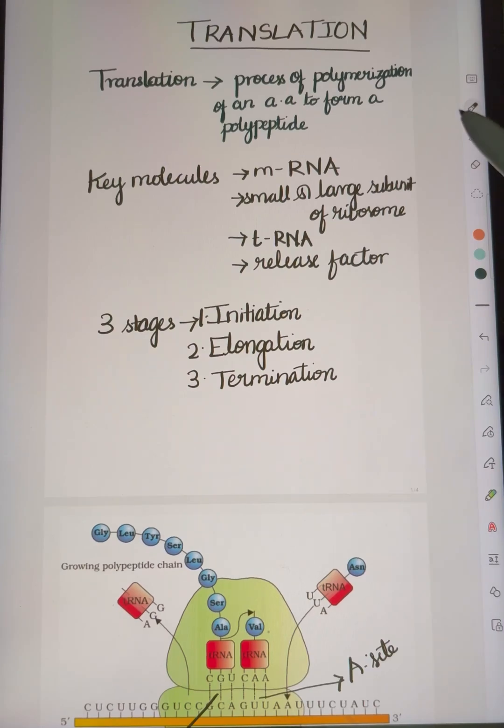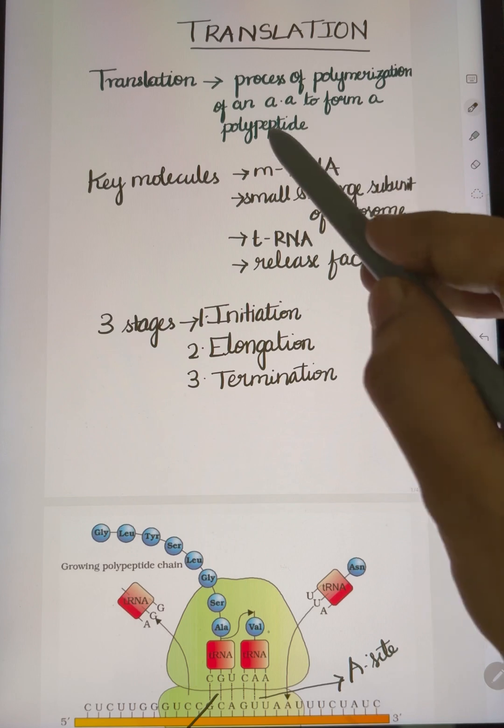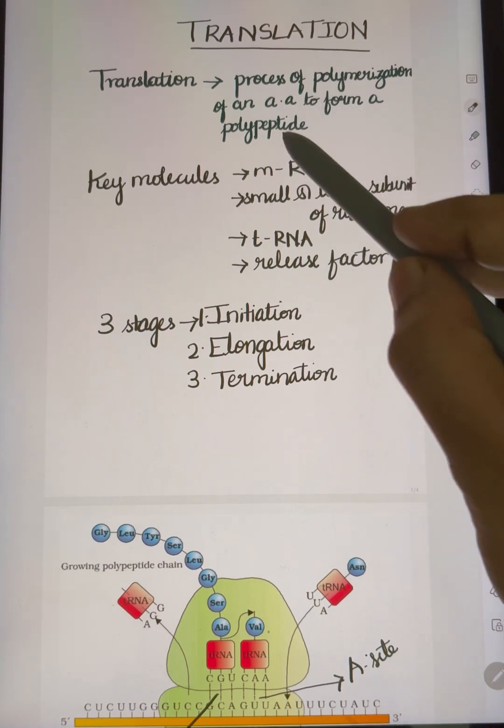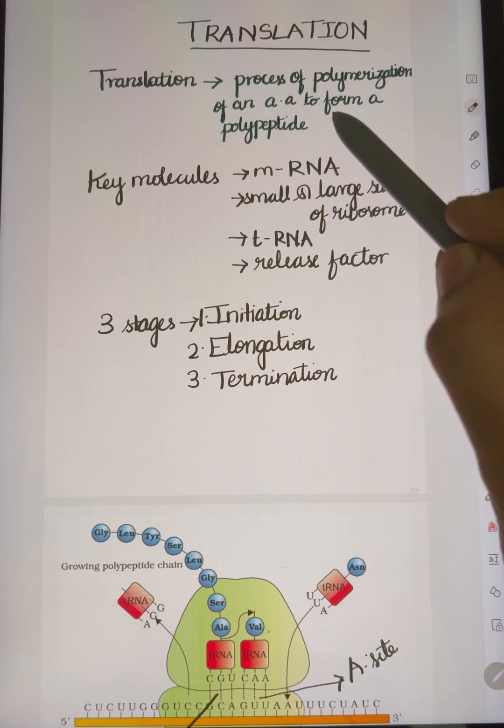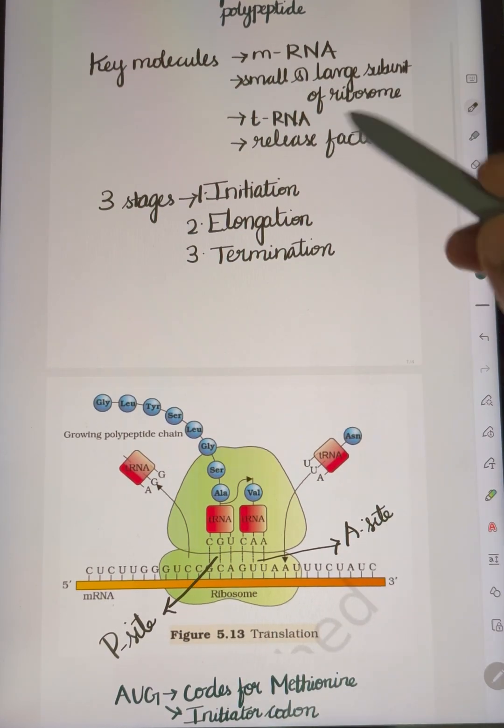Hello students, what is translation? Translation is the process of polymerization of amino acids to form a polypeptide. So many amino acids combine together to form a polypeptide, polypeptide or protein. Protein synthesis from mRNA template is called translation.